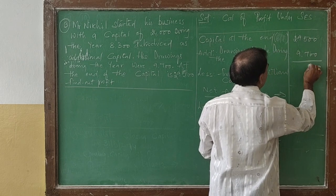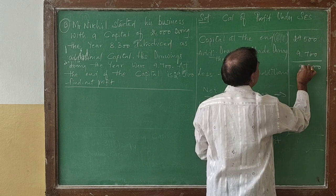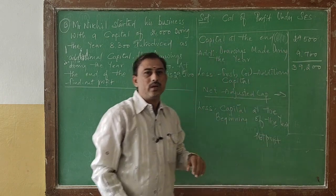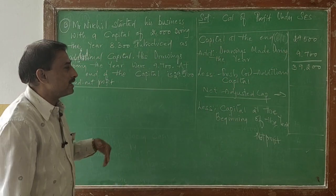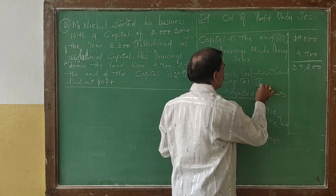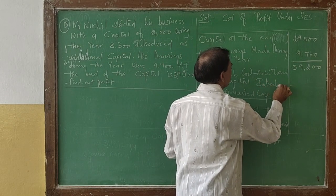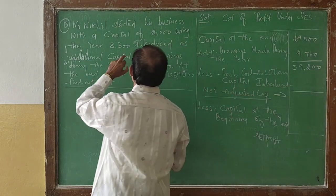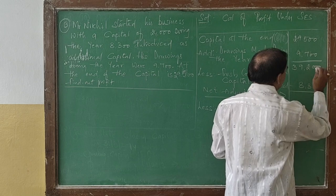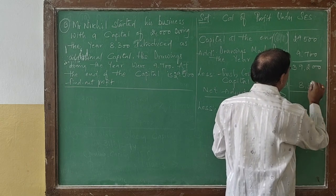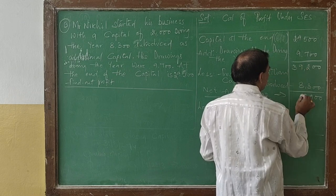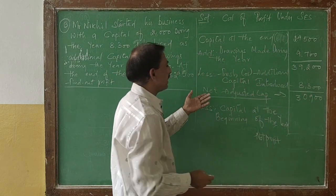Calculation of profit under single entry system: capital at the end of the year is 29,500. Add drawings made by the owner: 9,700. So 29,500 plus 9,700 equals 39,200. From that we minus the fresh or additional capital introduced, which is 8,300. So 39,200 minus 8,300 equals 30,900 — this is the net adjusted capital.